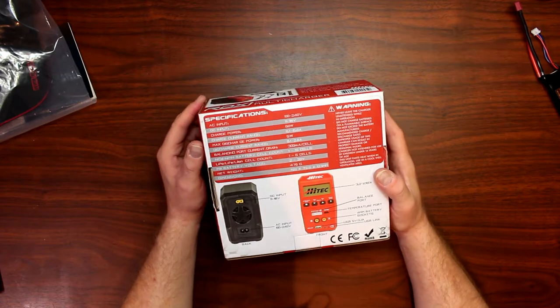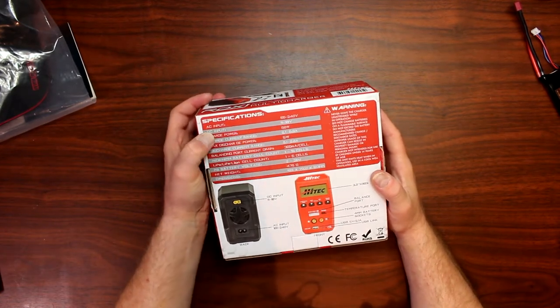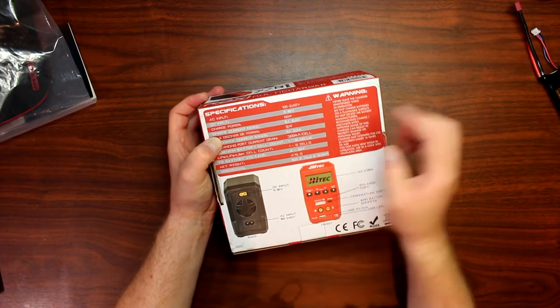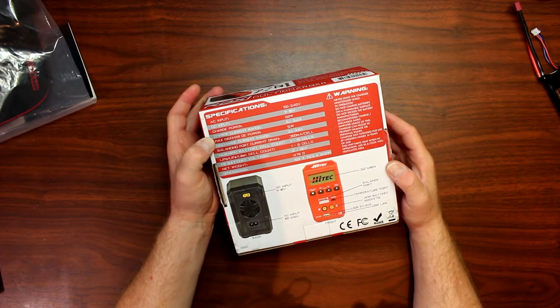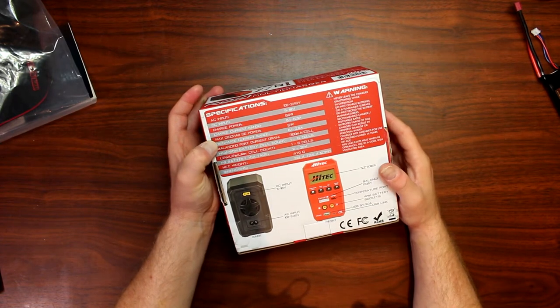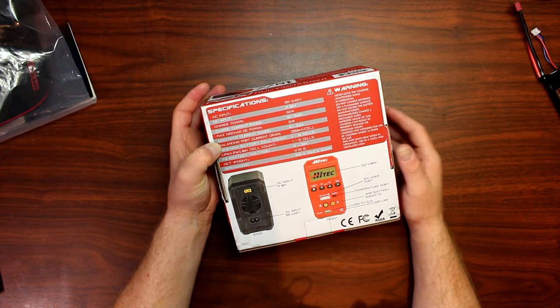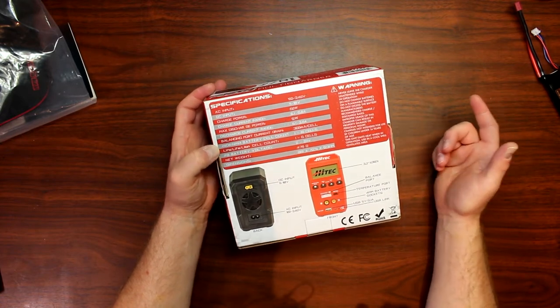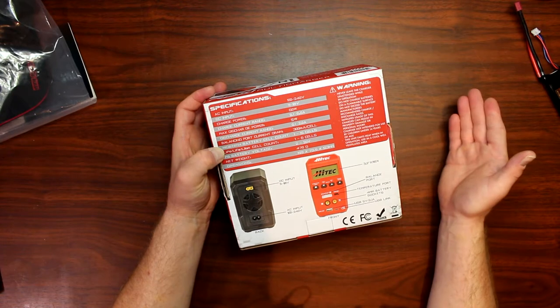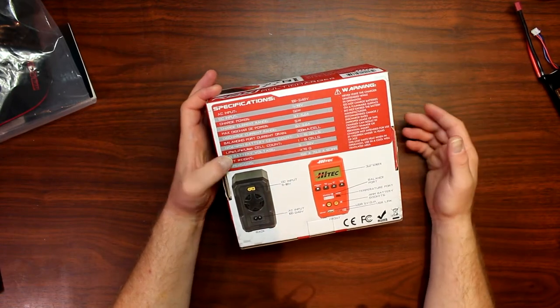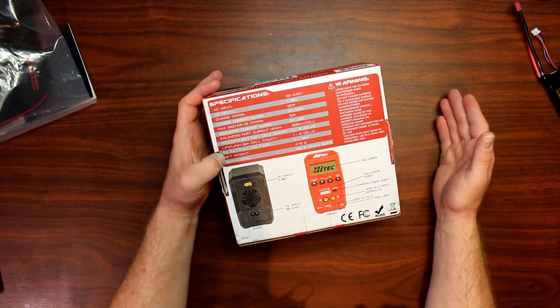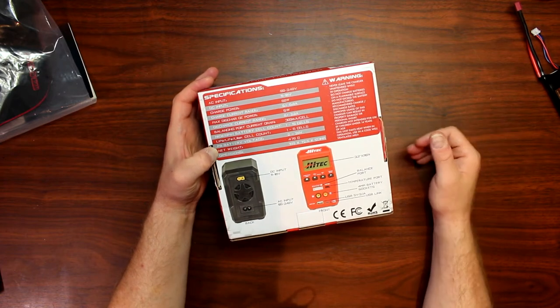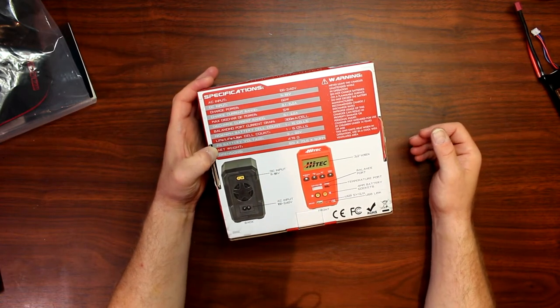Let's take a look at the specs. It's AC-DC input, 110 to 240. DC is 11 to 18 volts. Charge power is 60 watts. Charge current range is 0.1 to 6 amps. Discharge is 5 watts. Discharge current range is 0.1 to 2 amps. It balances to 300 millivolts per cell. Does NiCAD to NiMH 1 to 15 cell, LiPo 1 to 6 cell, PB is 2 volts to 20 volts. Net weight is 470 grams and dimensions are 159 by 72.5 by 123 millimeters.